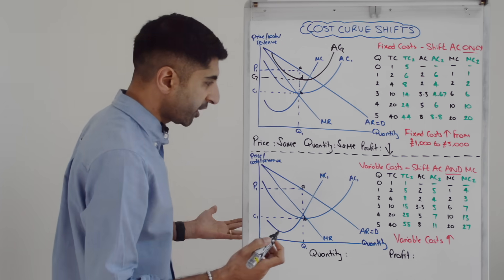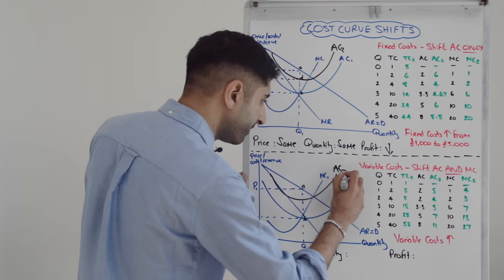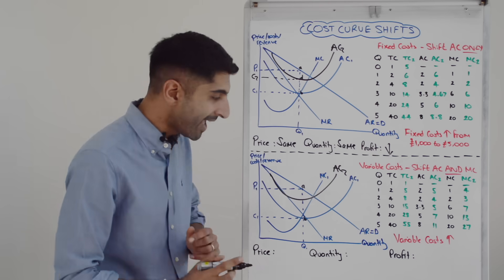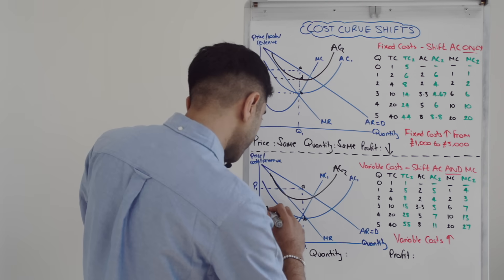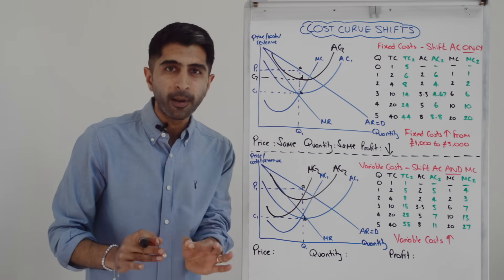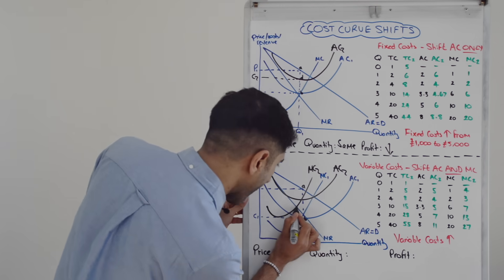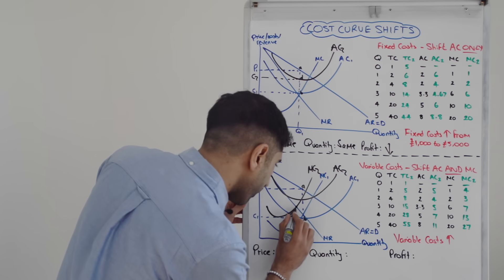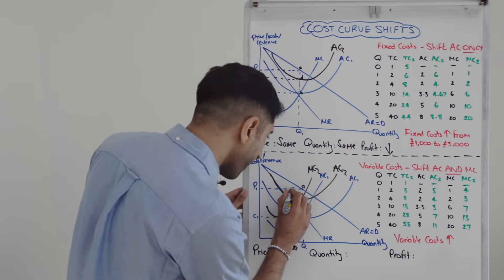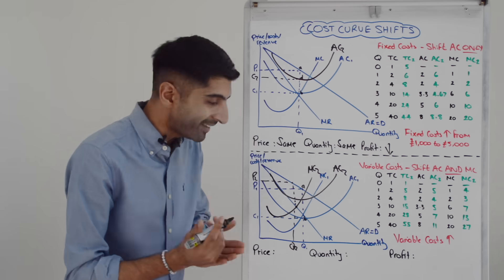So start by shifting your AC curve, just shift it up at any level. Something like that would work nicely. You need to shift your new marginal cost curve upwards as well, still cutting AC at its lowest point. So something like that would be perfect. Let's call that MC2. And now there is a lot of change on this diagram. With the shift of MC, there is going to be a new profit max point. So MC2 equals MR is over there. Let's call that quantity Q2. We still need to read the price off the AR curve. So go up to get the new price, call it P2.